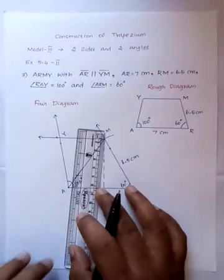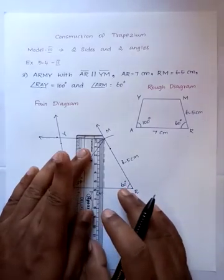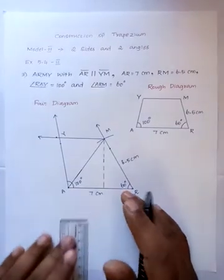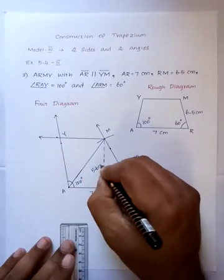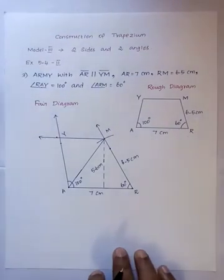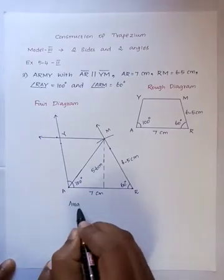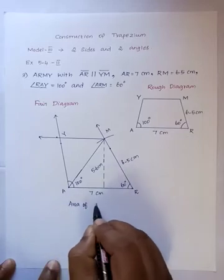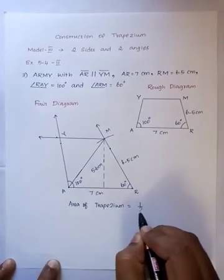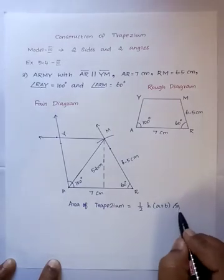Now we have to measure the height of the Trapezium. I will measure the height of the Trapezium — it is 5.6 cm. Now we have to find the area of the Trapezium. Area of Trapezium is equal to — what is the formula? One half into Height into A plus B, in square units.